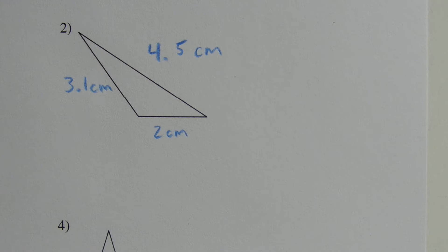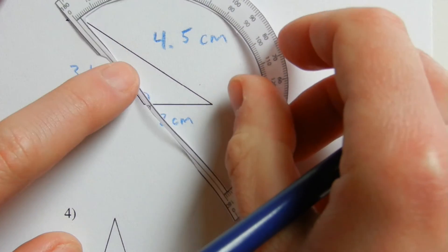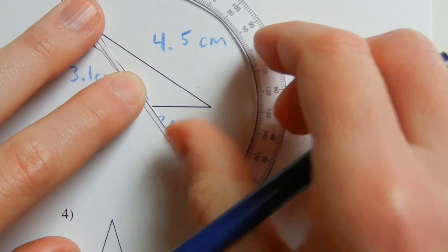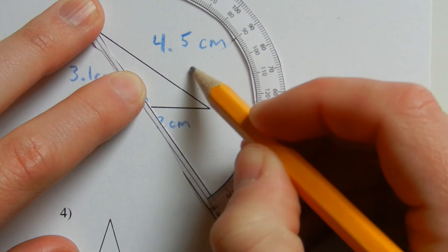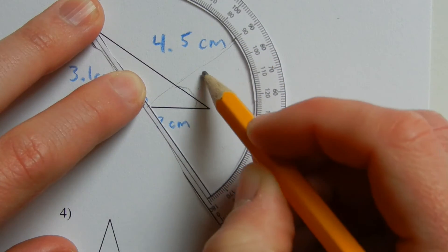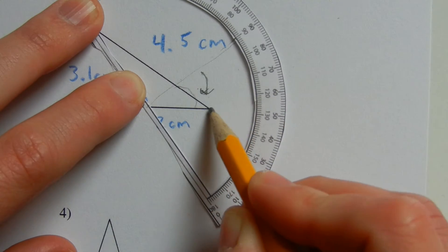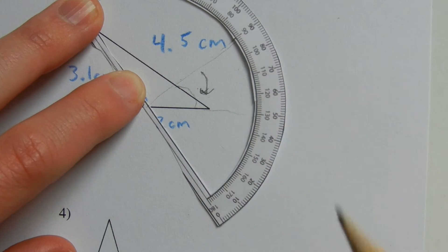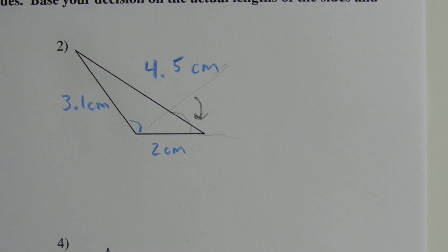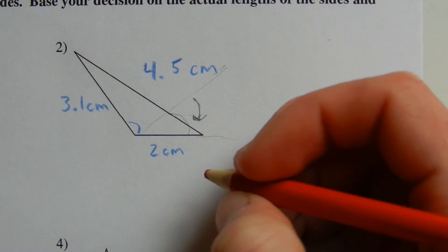Looking at this angle, when we put our protractor on that vertex, 90 degrees is approximately here, and the angle is indeed greater than 90 degrees — it is approximately 130 degrees. Therefore this triangle has an obtuse angle and is obtuse scalene.